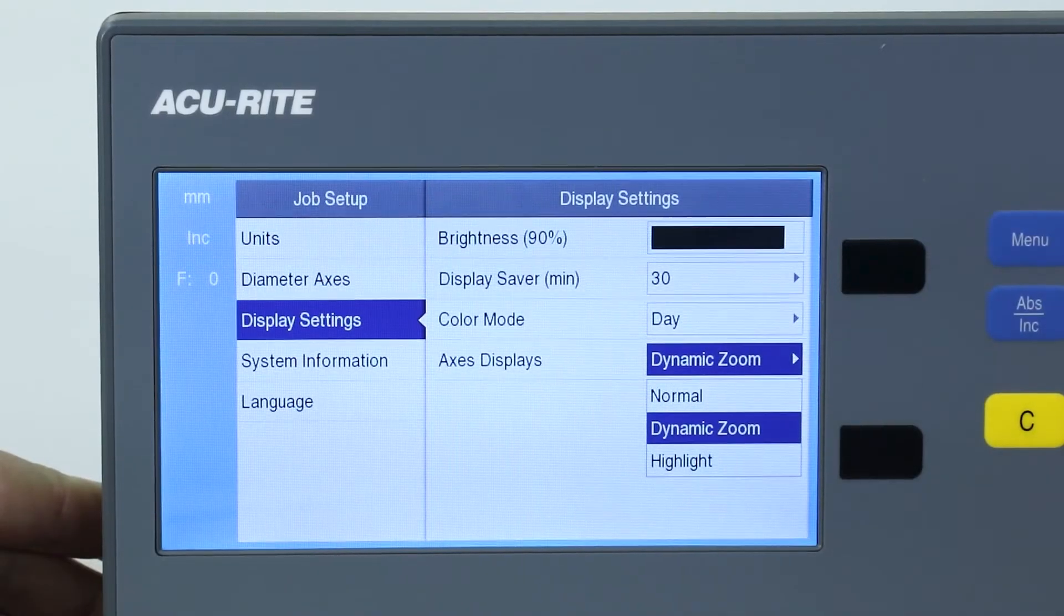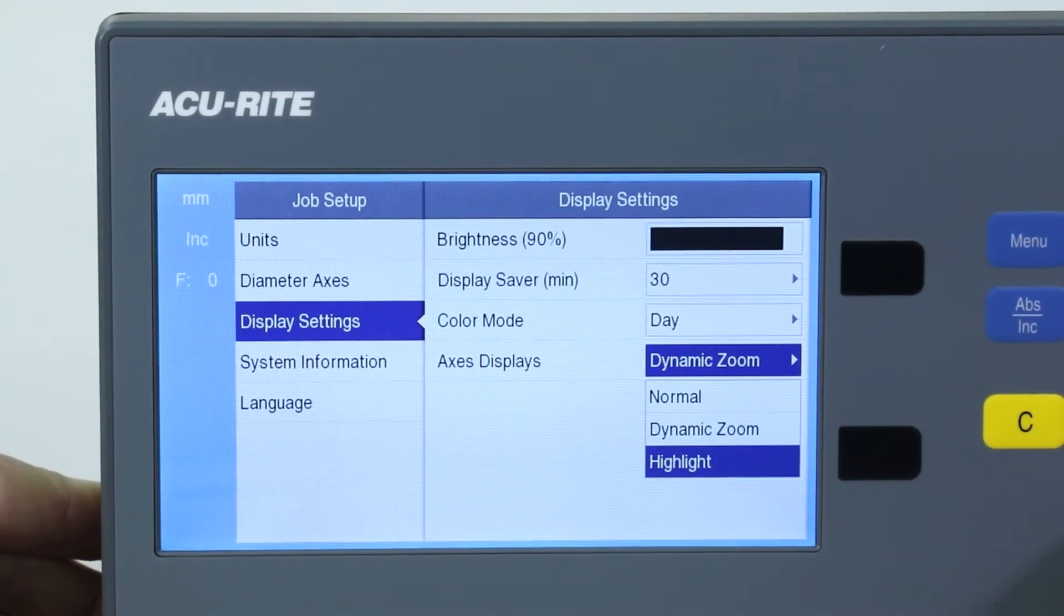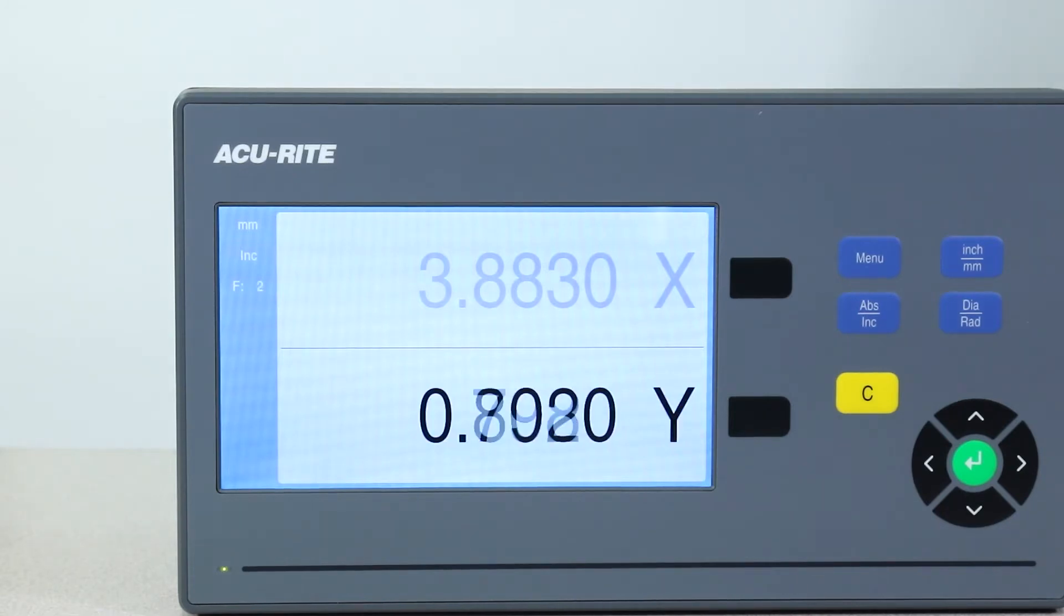You can also choose a highlight option. It works on the same idea. The axis that isn't moving is grayed out, while the axis that is traveling shows up in bold.